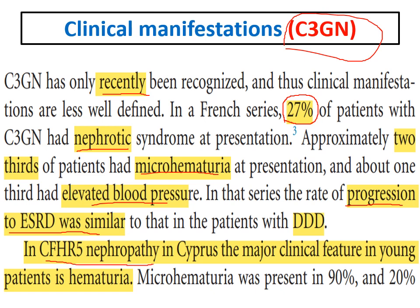In C3 glomerulonephritis, from a French series, 27% of patients present with nephrotic syndrome, two-thirds present with microhematuria and elevated blood pressure. In complement factor H-related protein 5 nephropathy, the major clinical feature is hematuria. So dense deposit disease features heavy proteinuria and nephrotic syndrome more prominently, while C3 GN features more hematuria and elevated blood pressure, and CFH-related protein 5 nephropathy primarily presents with hematuria.